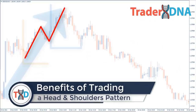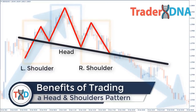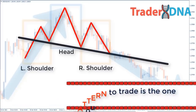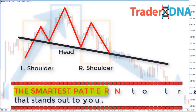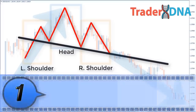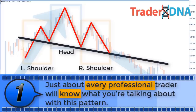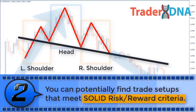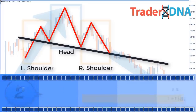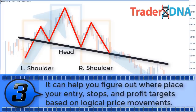Benefits of trading a head and shoulders pattern. The smartest pattern to trade is the one that stands out to you — the pattern your eye is drawn to and that you recognize. There are specific benefits to the head and shoulders pattern. First, just about every professional trader will know what you're talking about, making it easier to discuss with your trading community. Second, the head and shoulders pattern is found when there's a change in trend direction, potentially offering trade setups with solid risk-reward criteria. Third, it helps you figure out where to place your entry, stops, and profit targets based on logical price movements.